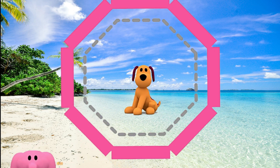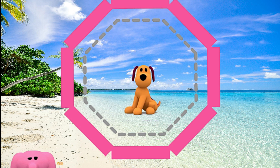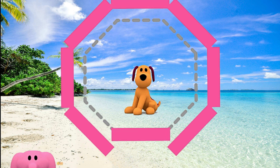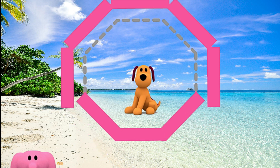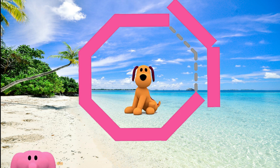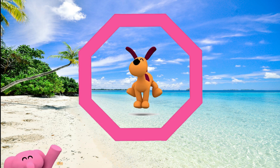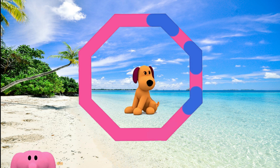Put the shape back together. One side, two sides, three sides, four sides, five sides, six sides, seven sides, eight sides. And an octagon has eight corners.